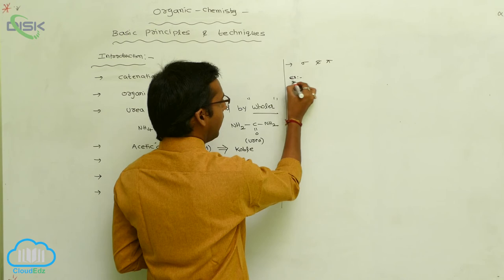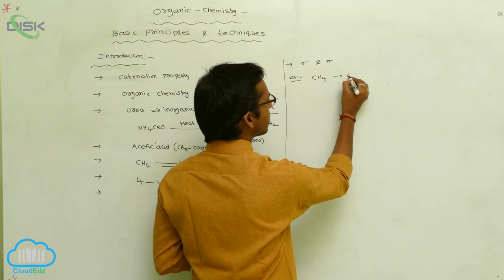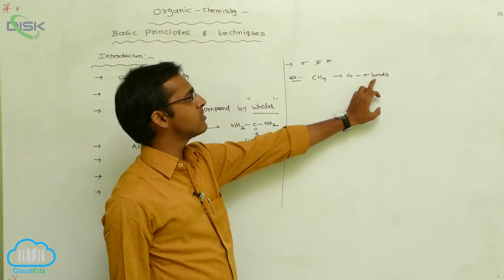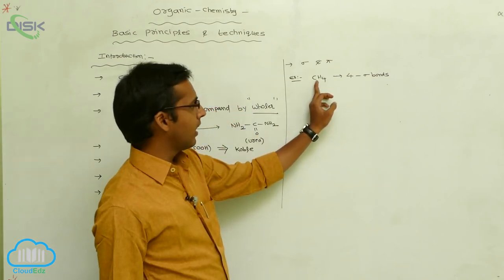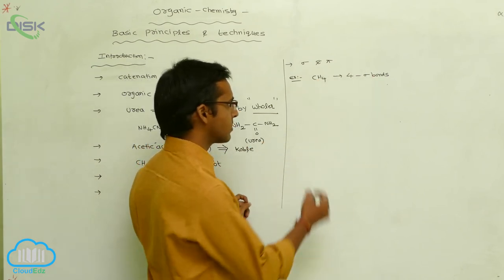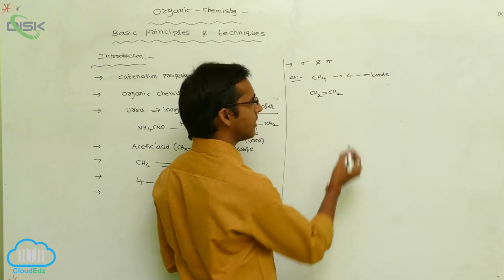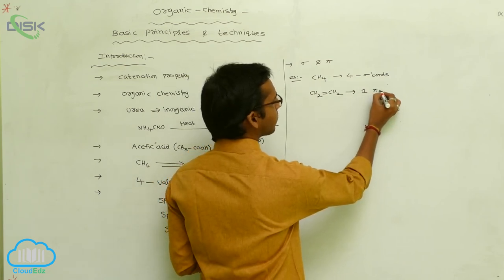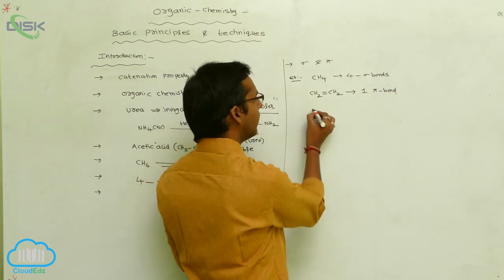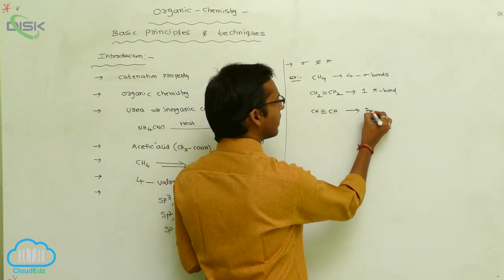Carbon compounds generally form sigma bonds and pi bonds. For example, in methane, four sigma bonds are present. Generally, all alkanes form only sigma bonds — 'ane' is the suffix for alkane. Whereas for alkenes, for example ethene (CH2=CH2), alkenes contain one pi bond.